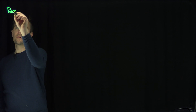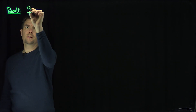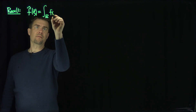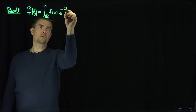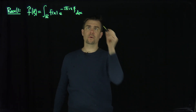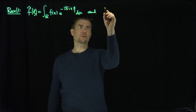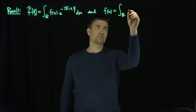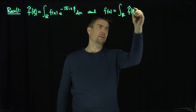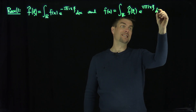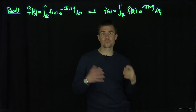Let's recall how we use the Fourier transform. Recall that a function f has a Fourier transform f-hat of ξ defined as the integral over ℝ of f(x) e^{-2πixξ} dx. The corresponding Fourier inversion formula gives f(x) equal to the integral over ℝ of f-hat(ξ) e^{+2πixξ} dξ. This is the Fourier transform and Fourier inversion.